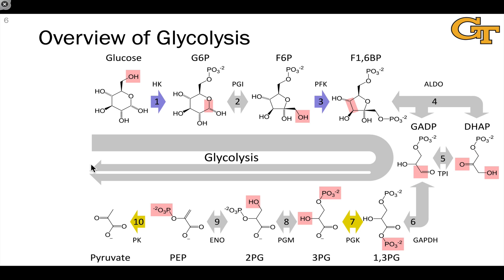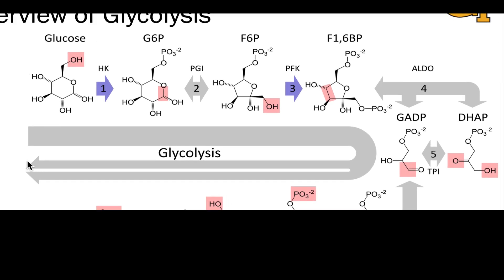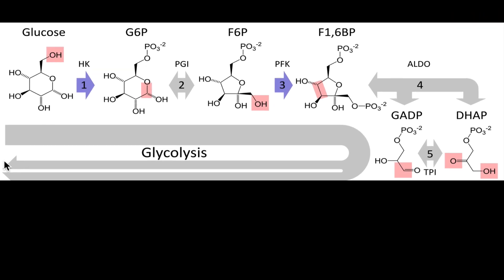In stage one of glycolysis, glucose is broken up into two equivalent three-carbon fragments, glyceraldehyde phosphate. In this video, we're going to look in detail at the steps of stage one of glycolysis.